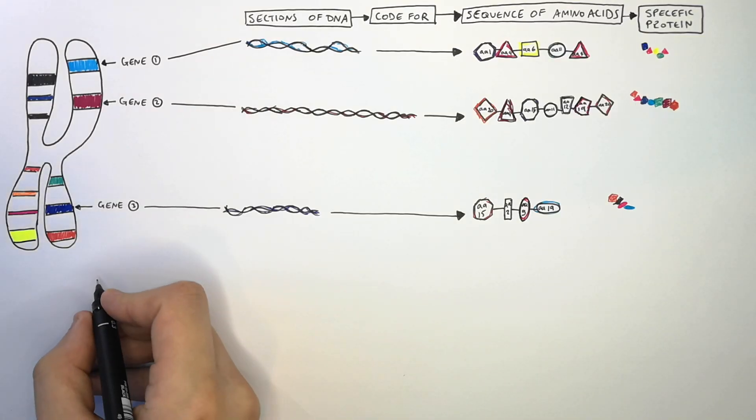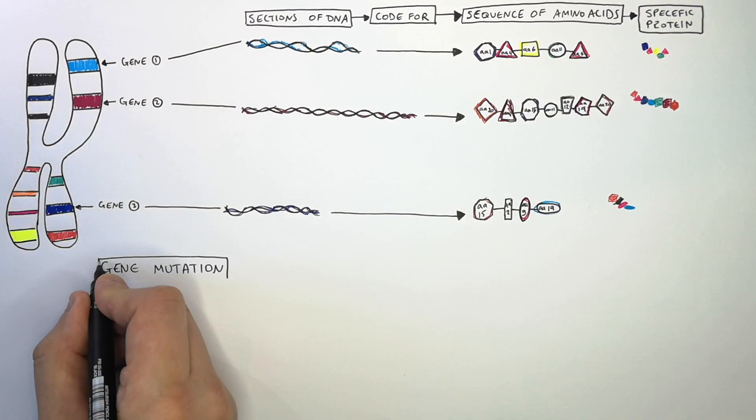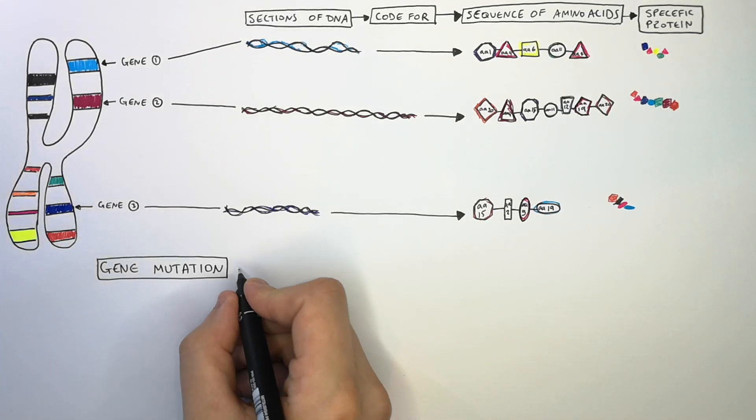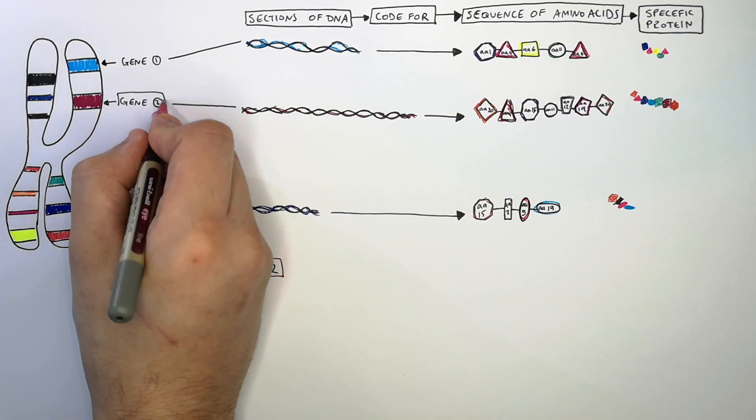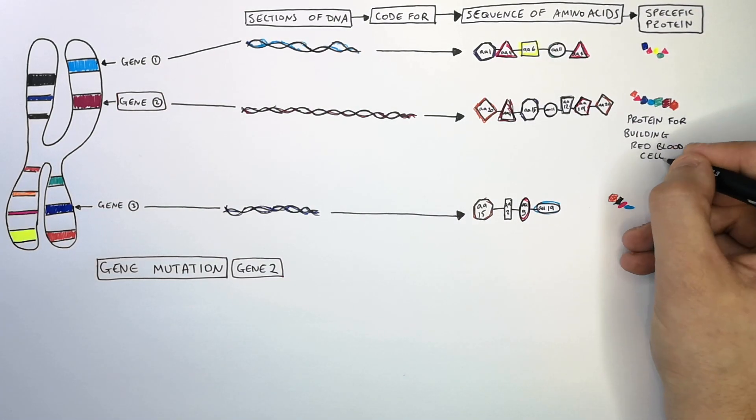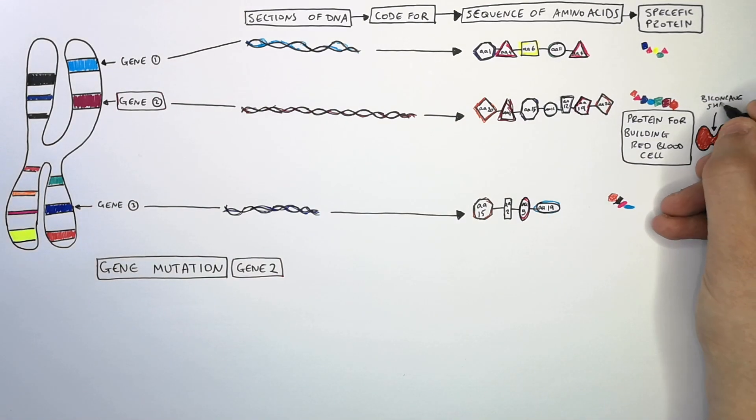Now let's look at the effect of a gene mutation. A mutation is a change in the DNA sequence. Let's imagine that gene 2 codes for a protein used in the production of red blood cells which allows it to have its biconcave shape.